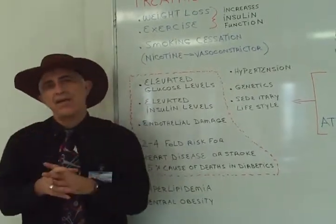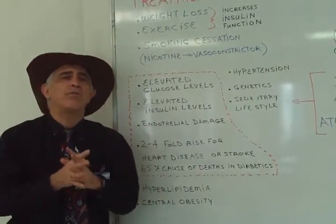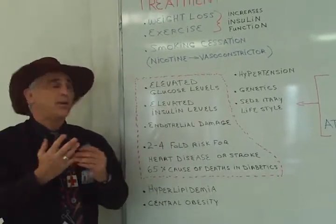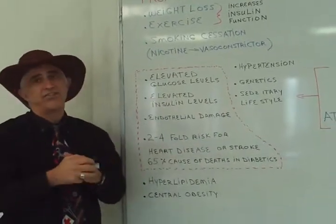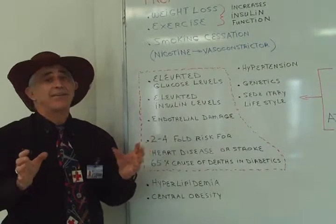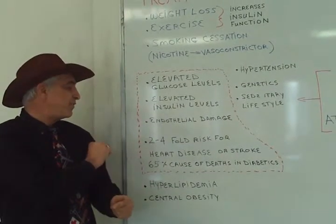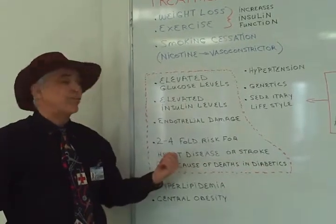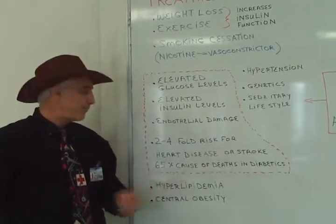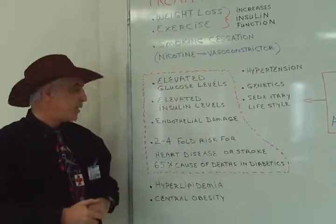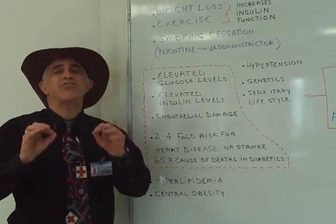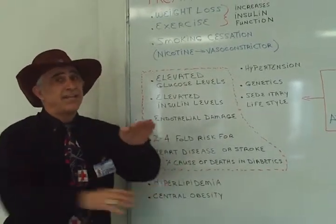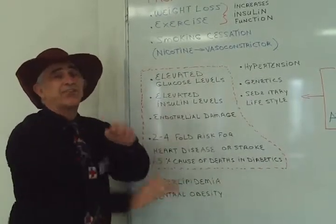We know that a diabetic has a 2 to 4 fold increased risk for strokes or heart disease. In fact, 65% of the deaths in diabetes are related to heart disease and stroke. Atherosclerosis is not unique to the diabetic, but if the diabetic has these other problems, that will add to the effect.